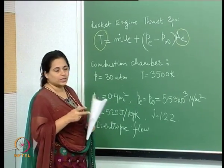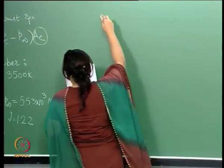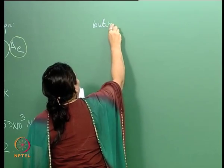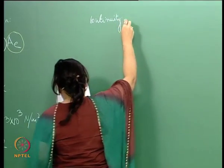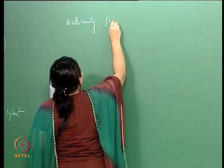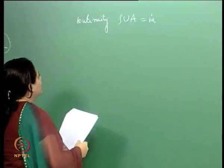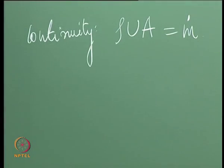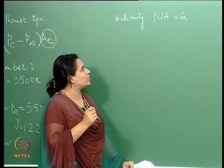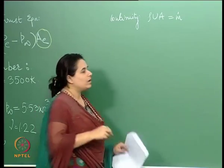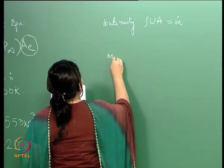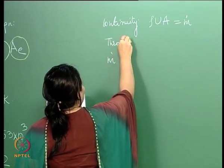Let us start with the continuity equation. Continuity tells us the mass flow rate. A convenient place to evaluate the mass flow rate is at the throat. All values at the throat of the nozzle are denoted with a superscript star. So, taking the throat as the convenient location, we write the continuity equation there.